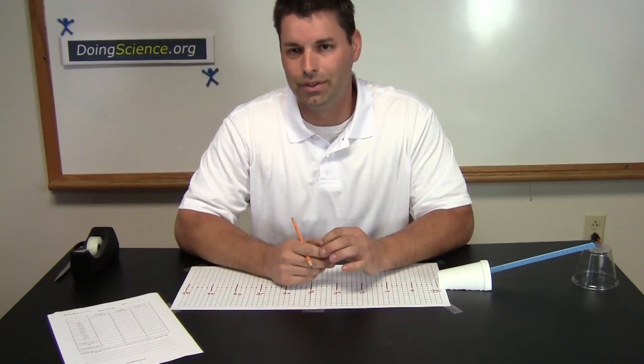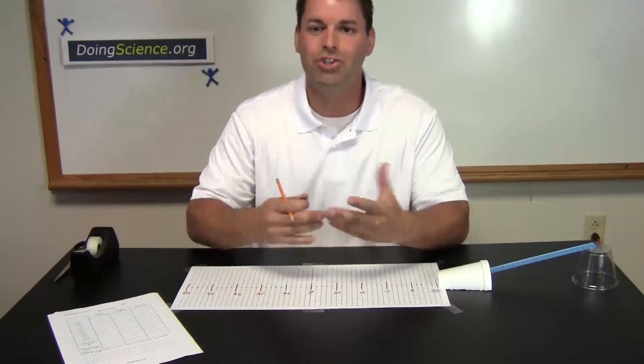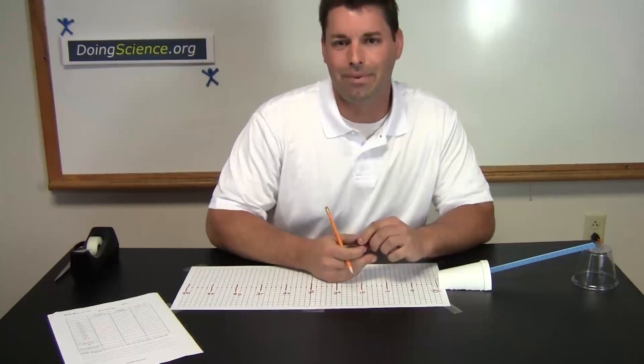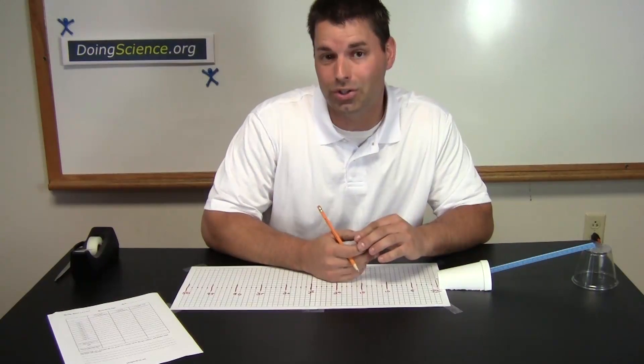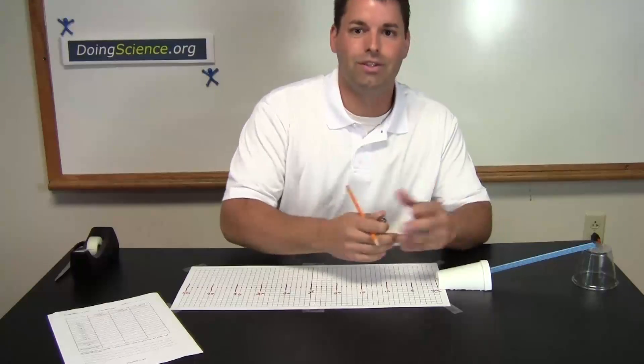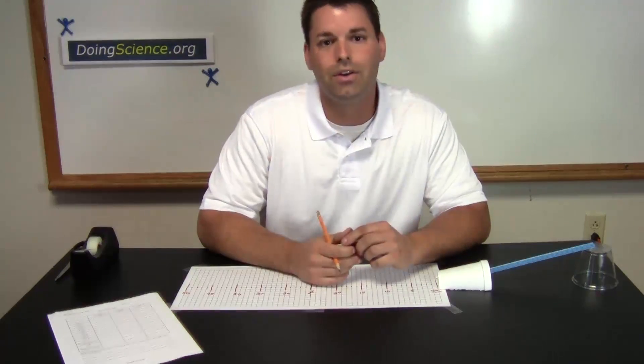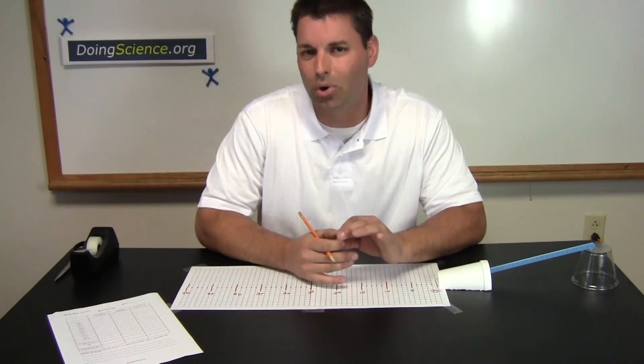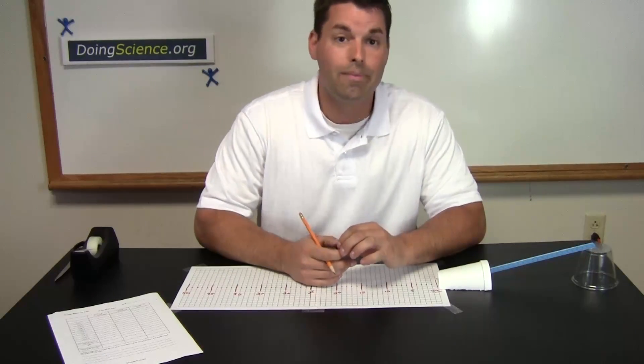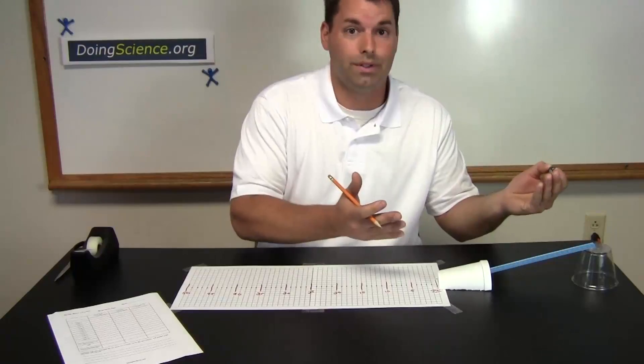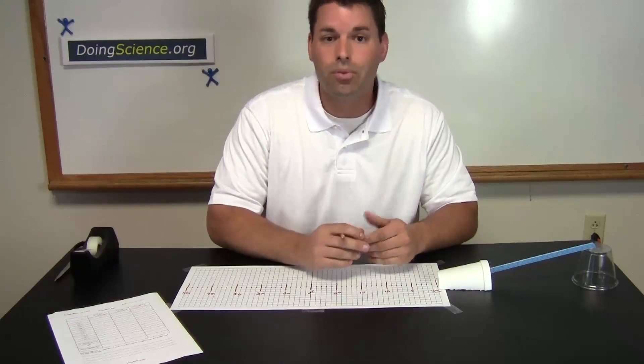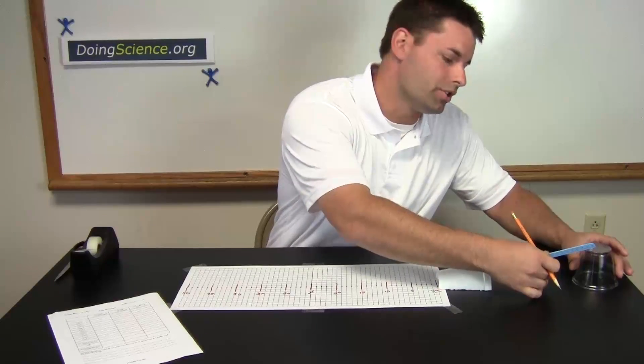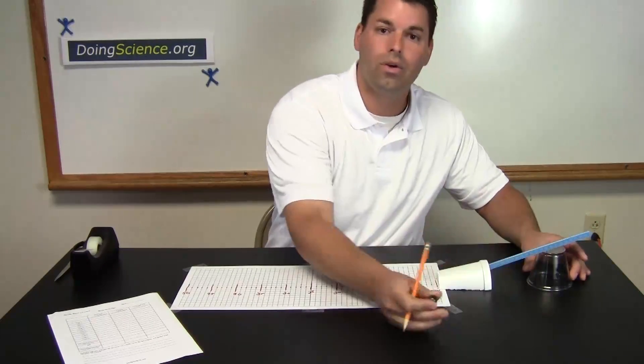Now we would like students to explore by changing the ramp or the marble in some way and predicting what will happen to the distance the cup is pushed before they actually do the trials. Here are a few suggestions that we recommend. Perhaps they could use a smaller or larger marble. Maybe they can release two marbles at once instead of one marble. Perhaps they can change the angle of the ruler. Make the angle larger or smaller.